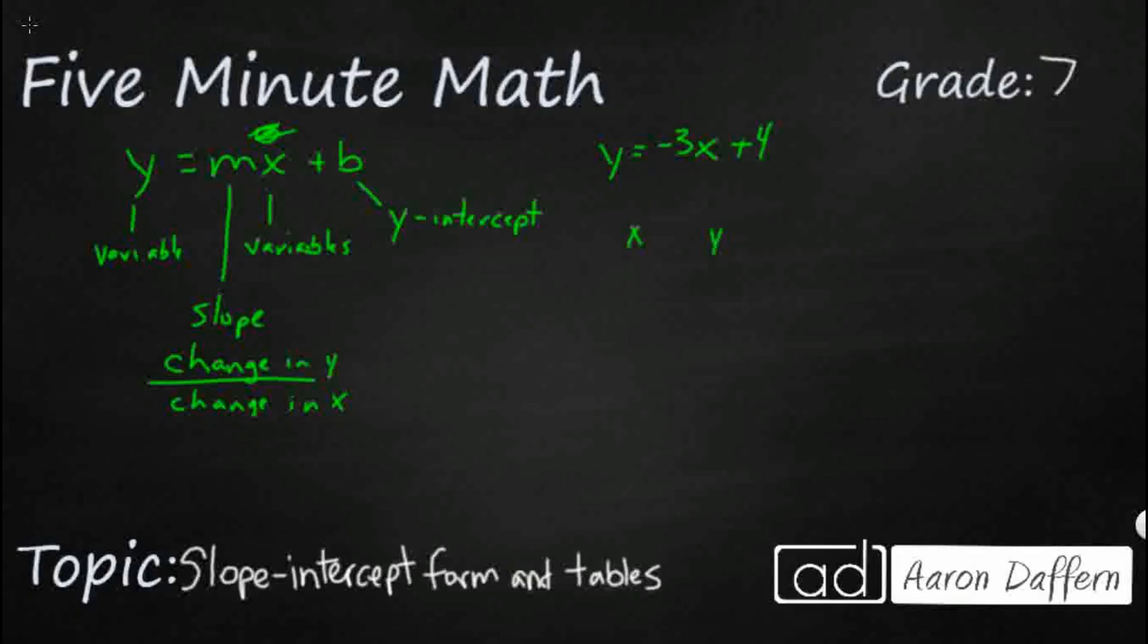But typically when we see a table, we will just see x y and all we're doing is we're just plugging in x's and y's. So we could, if we wanted to, we could put an x of zero. And we're just going to plug these in. Negative 3 times zero plus 4. So that's going to be zero plus 4. So that's just going to be 4. And that's why our y-intercept is 4 because we put x as a zero.